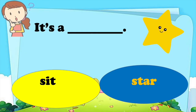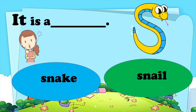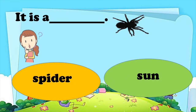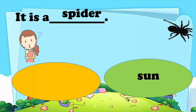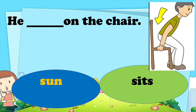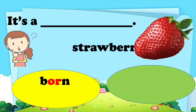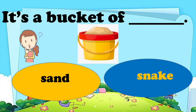How about this? It's a suit or star? It's a star. Wonderful, very good. Let's go to the next — it is a snake or snail. And you are correct. All right, let's go to the next one — it is a spider or a sun. And your answer is spider. Great job! Let's find out what's the next picture: he sits on the chair. That's the correct answer. Next: is it strawberry? And you are right. Strawberry is the correct answer.